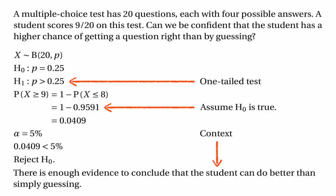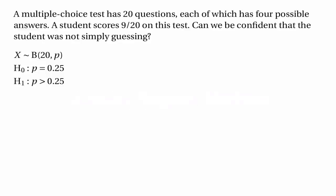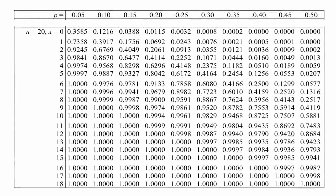Before moving on, there's another way of answering this question and that's by using a critical region. Going back to the stage where we've set up the two hypotheses, we can go straight to the tables and find the critical region. We scan up the column with 0.25 at the top until we get to the probability that's just a little bit bigger than 0.95, because that's the final case in which we'll end up rejecting the null hypothesis. The probability of getting eight or fewer correct answers is 0.9591, and so 1 minus 0.9591 — which is a little bit less than 0.05 — is the probability that x is greater than or equal to 9.